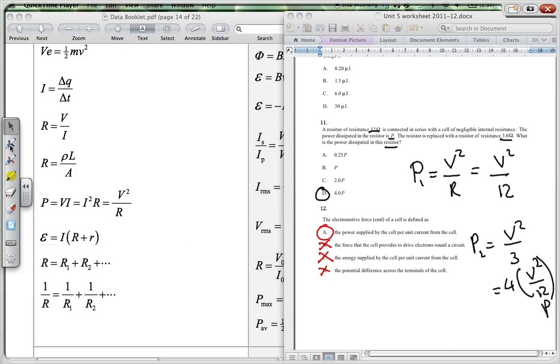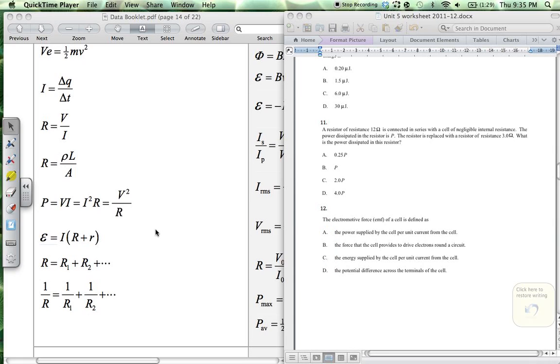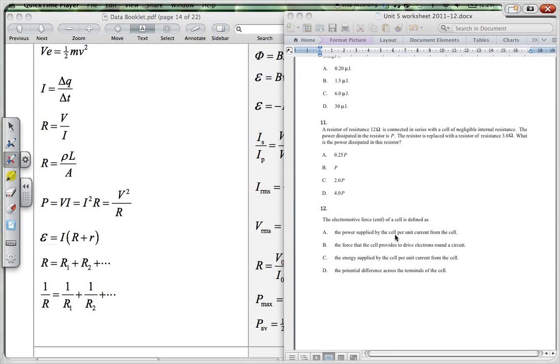Now let's just check and see why that is true. We've got the power supplied by the cell per unit current, so I'm looking at a power divided by I - power per unit current.